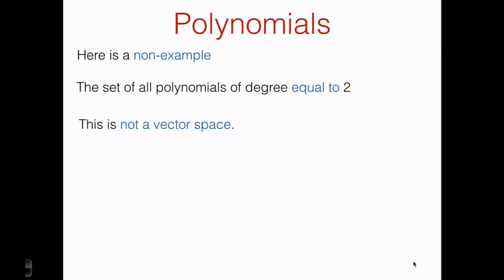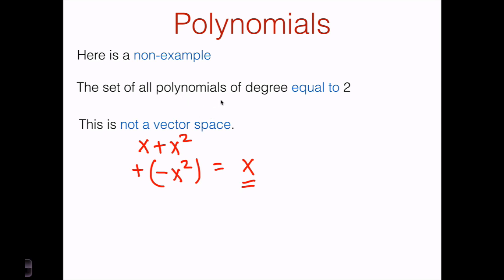Just to check your understanding, let's consider a non-example — something that is not a vector space. Consider the set of all polynomials of degree exactly equal to two. This is not going to be a vector space. For example, it contains the polynomial x plus x squared, which has degree two, and it also contains the polynomial minus x squared. But if we add these two polynomials together, we get the polynomial just x, which is not a polynomial of degree two. So this set is not closed under addition, and therefore it is not a vector space.